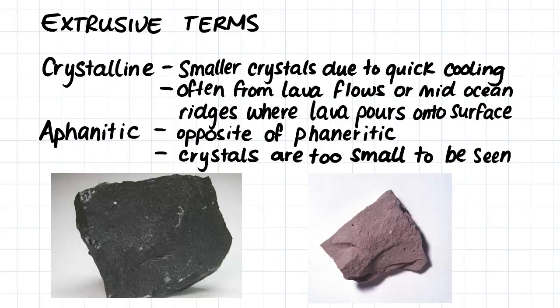Crystalline extrusive igneous rock forms when molten rock spills out onto the Earth's surface. This formation process means that we have much smaller crystals due to the very quick cooling of the molten rock. We often get this from lava flows or mid-ocean ridges where the lava is able to pour out onto the surface of the Earth and not do so explosively.